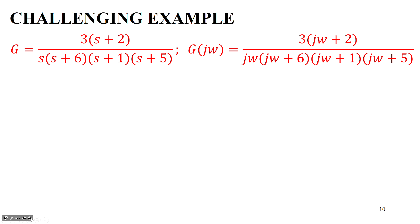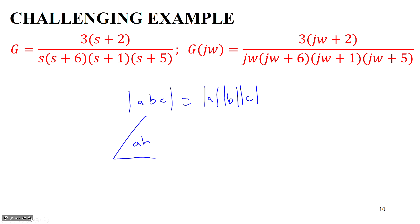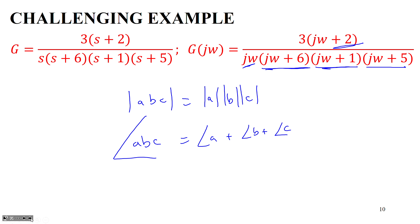You should know your complex number rules: the modulus of A·B·C is the modulus of A times the modulus of B times the modulus of C, and the argument of A·B·C is the argument of A plus the argument of B plus the argument of C. Using these product and addition rules, you can split a seemingly complicated transfer function into individual factors and handle each one separately.